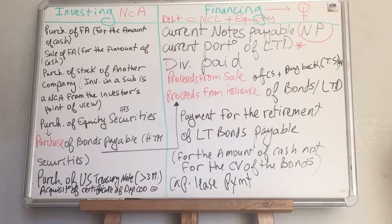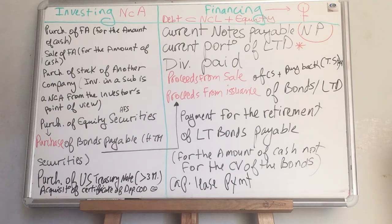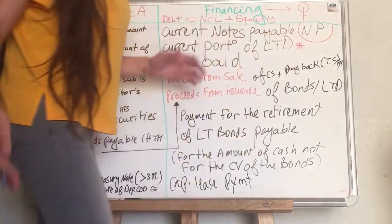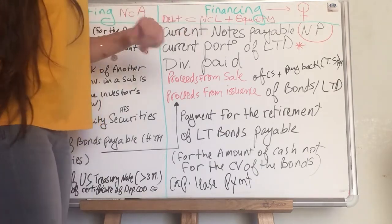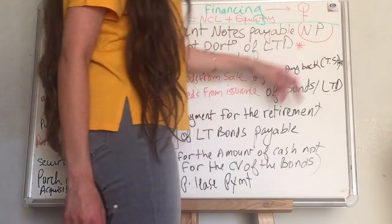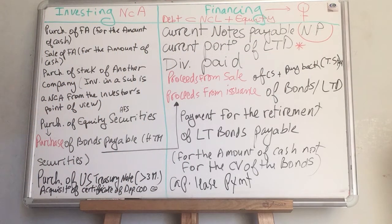Pay attention to this because you will make a mistake while solving MCQs. Current notes payable — students think that because it's a current liability, it's reported in the operating section. That is incorrect. Current notes payable are an exception to the rule: they are current liabilities, but they are reported in the financing section. The current portion of long-term debt is also reported under the financing section.